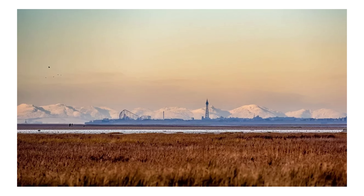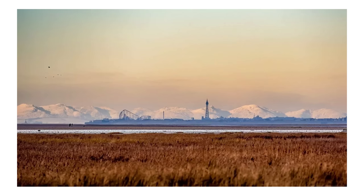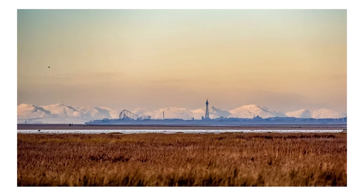This photograph actually converted at least one Flat Earther, Ranty, who realised that as we know the heights of Blackpool Tower and the hills in the background, and we know their respective distances from the photographer, then if the Earth were flat from that location, the angular size of the mountains would make them appear taller than the Tower.